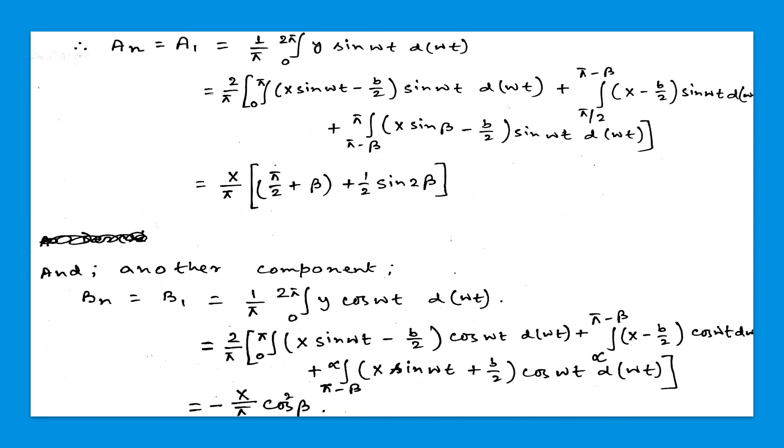So if we put the limit value and take the integration, then we get the final value that is minus X/π cos²(β).